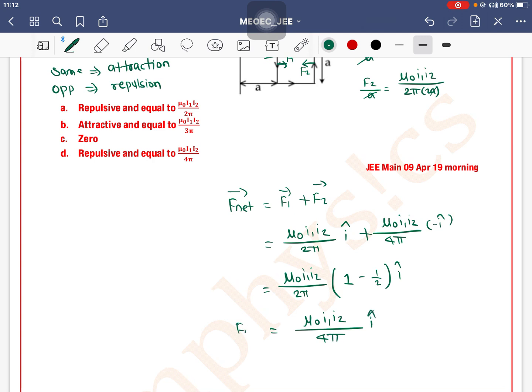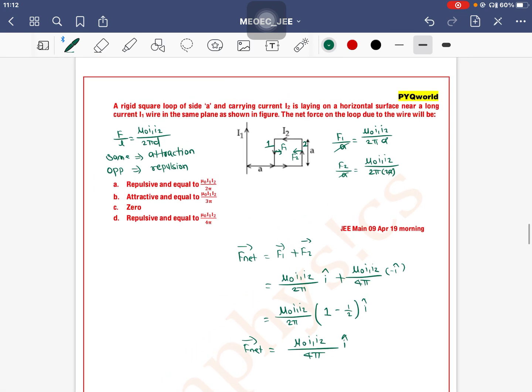So the net force is mu0 I1 I2 by 4 pi a in the i cap direction. Here you have a current carrying straight wire with current i1, and the loop experiences a force in the i cap direction, meaning it's moving away. This is a repulsive force equal to mu0 I1 I2 by 4 pi a. So option D is the correct one.